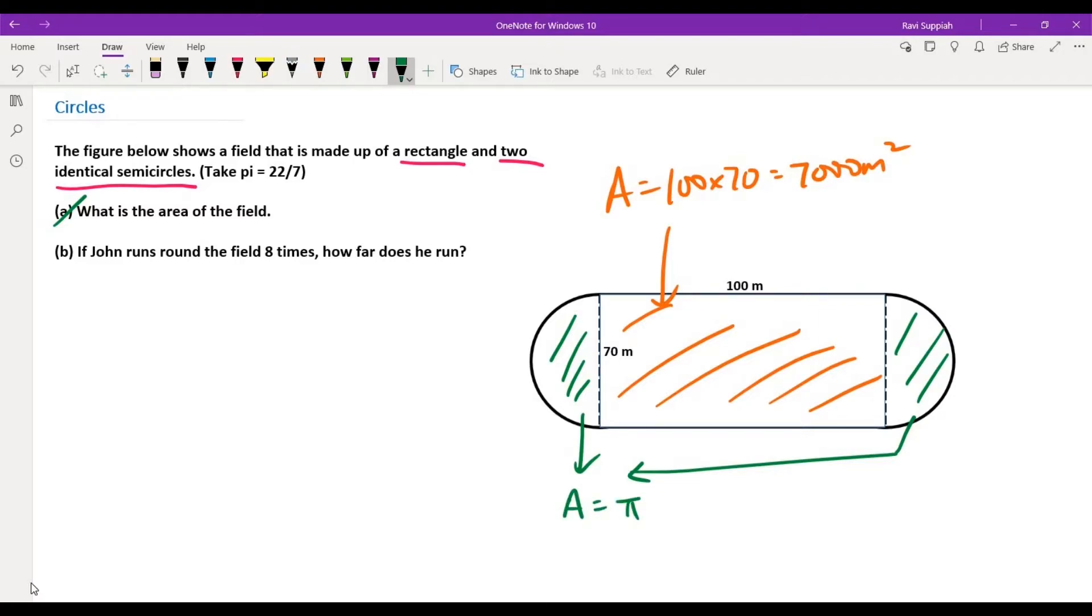The single circle area is given as pi R square, so it will be 22 over 7 times R. We are also told that the diameter here is 70, so the radius is 70 by 2. And that will give us an answer of 3850 meter square.